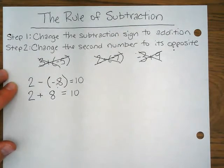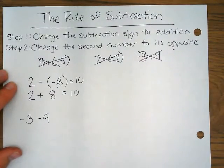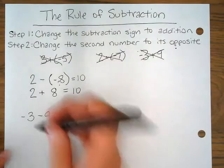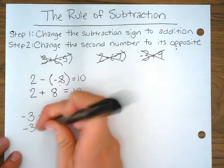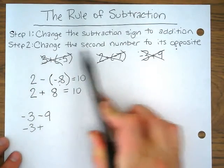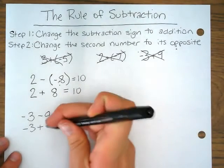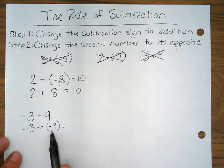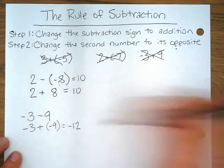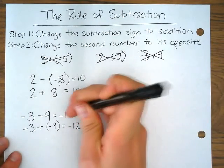Let's do one more example. Let's say we have negative three minus nine. Using the rule of subtraction I'm going to keep my first number the same. Step one says change the subtraction sign to addition. And step two says change the second number to its opposite. We're subtracting by a positive nine, and the opposite of positive nine is negative nine. So then I can do negative three plus negative nine, which I could use a number line for or I could solve in my head. I know that negative three plus negative nine equals negative twelve. Therefore I know that negative three minus nine also equals negative twelve.